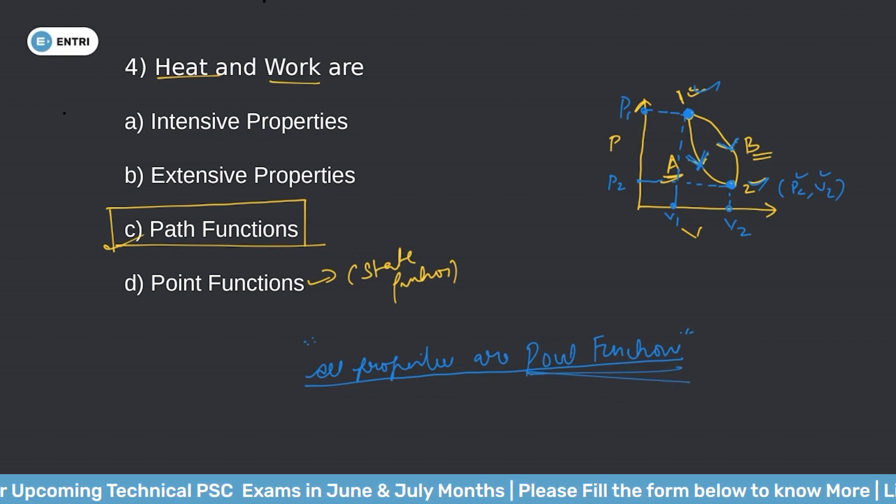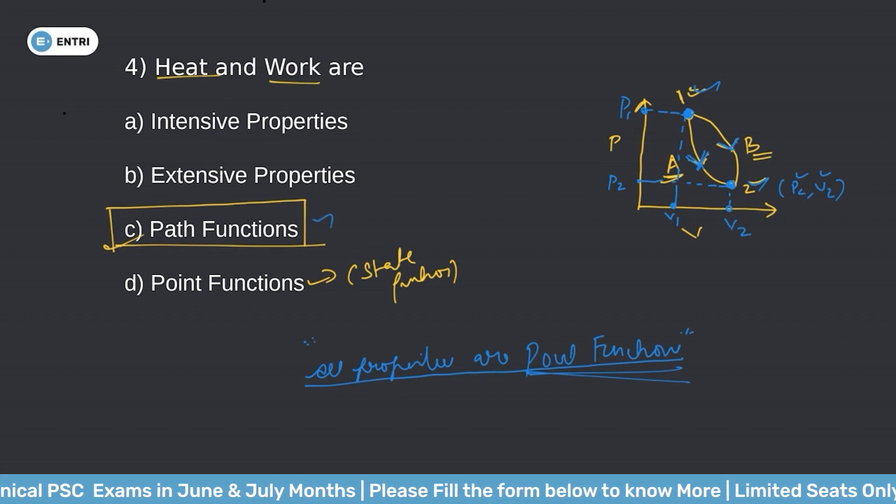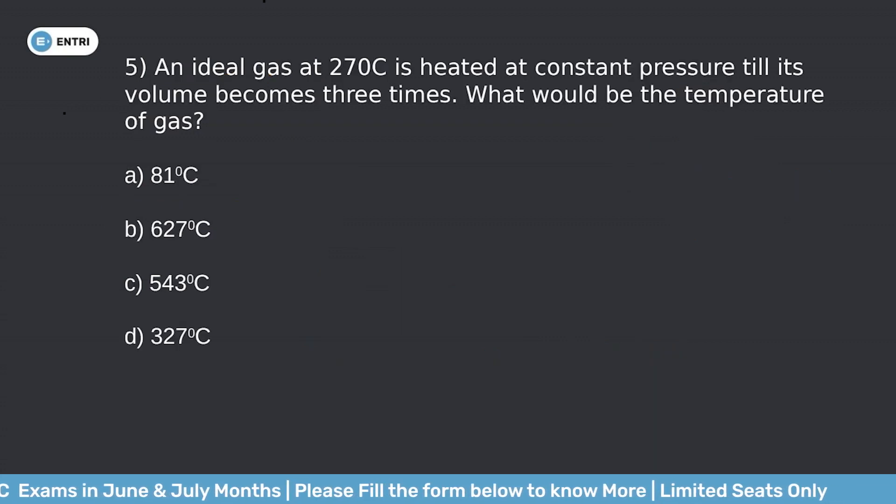So the answer to question 4 is: heat and work are path functions. Option C is correct.